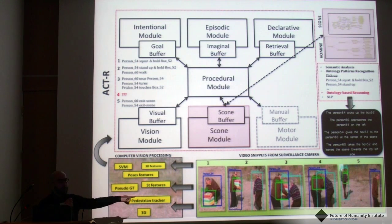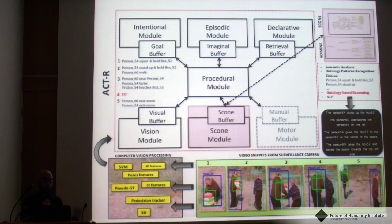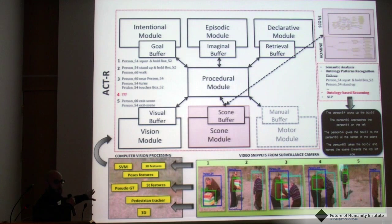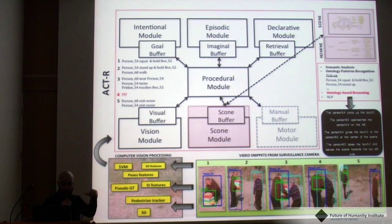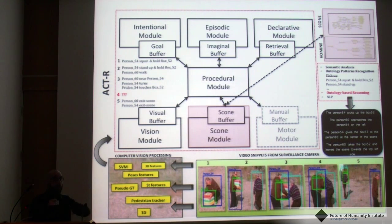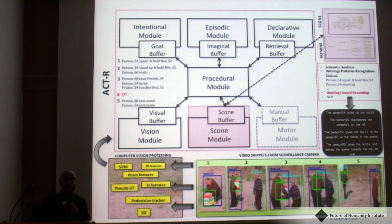In snippet number 5, it is really simple for us to understand what is going on, but the system needs more information to perform that inference. From the features computed at the computer vision level, ACT-R receives information: there is a person squatting, a person standing up, and another person walking and approaching the first. Then person 54 touches the box, then we see nothing, then the box exits the scene, and then person 60 exits the scene — there are no more entities.